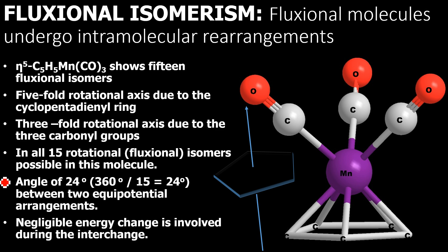The symbol eta in naming or writing the formula of an organometallic compound indicates the hapticity. The cyclopentadienyl ring has two double bonds, and the pi electrons in these two double bonds together with the cyclopentadienyl anion contribute a total of five electrons from the contiguous five carbon atoms to form the metal-carbon bond. Carbonyl is the carbon monoxide ligand, and such complexes are quite common.